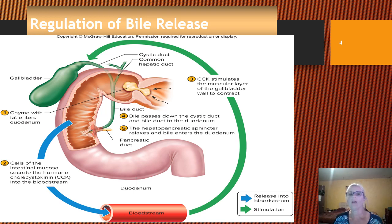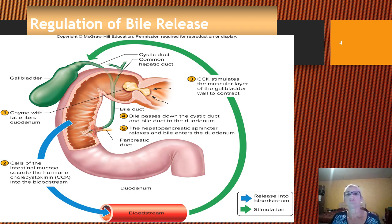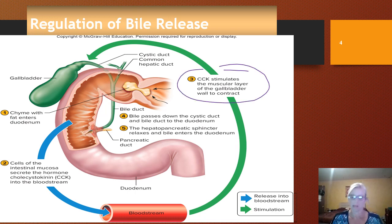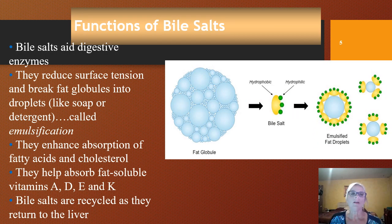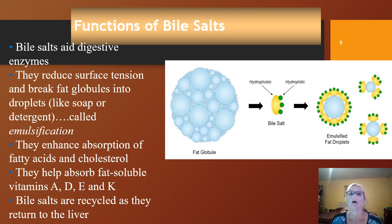When chyme that is high in fat content enters the duodenum, cholecystokinin is going to stimulate the gallbladder to contract and release bile. Bile salts help with digestive enzymes and help the absorption of fatty acids.